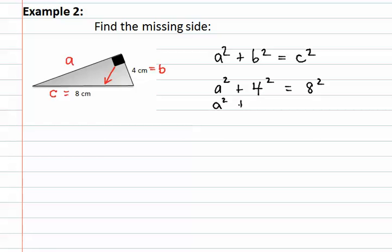This results in A squared plus sixteen equals sixty-four. We now need to isolate the variable, so we subtract sixteen from both sides. We now have A squared alone on one side of the equation. On the other side of the equation, we have sixty-four minus sixteen. Sixty-four minus sixteen is forty-eight.